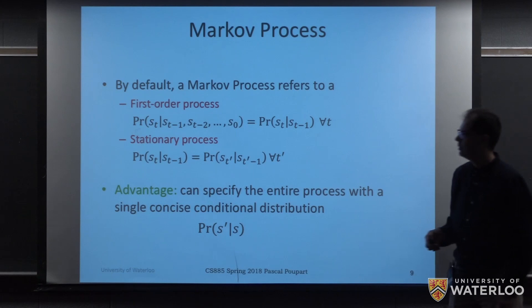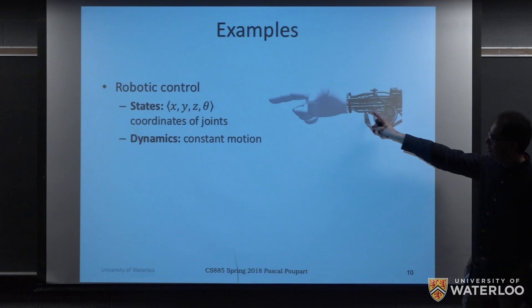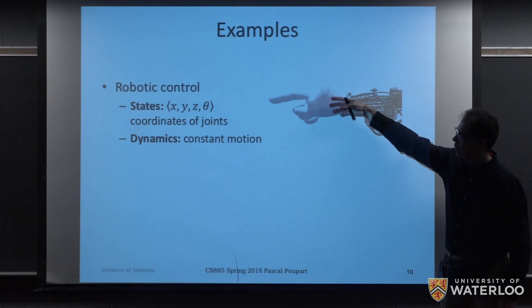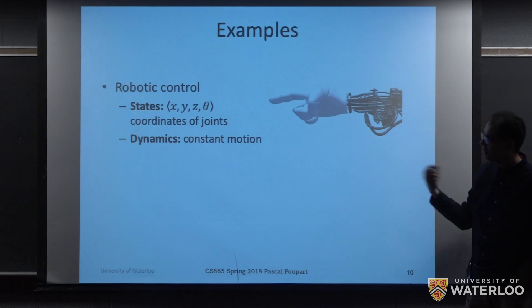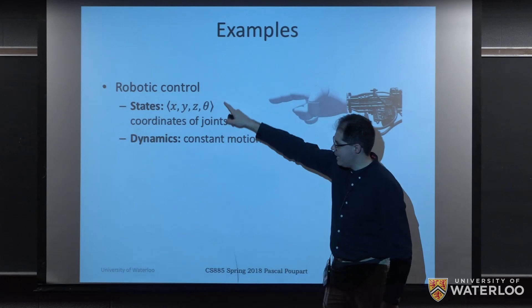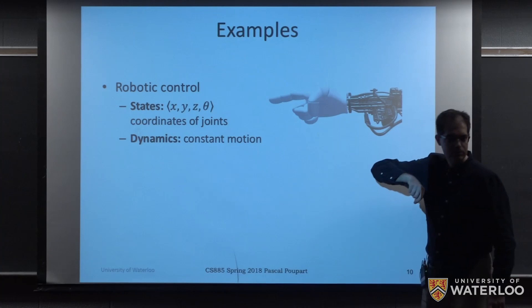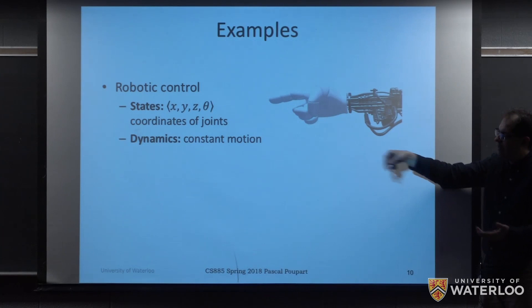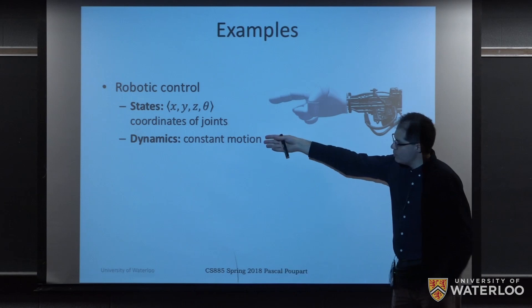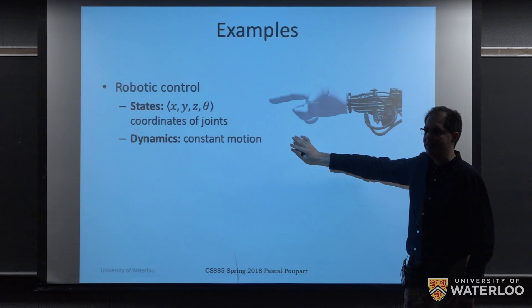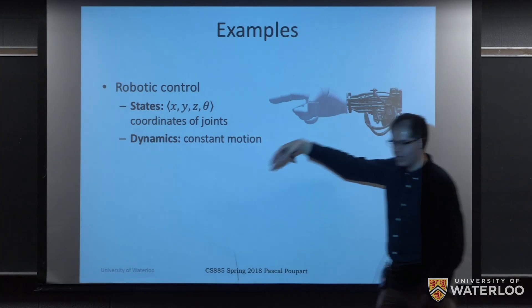As a concrete example, if we consider robotic control — let's say we've got a robotic arm and we're controlling the different articulations in the fingers so that we can grasp things. For every joint, we might want to model as a state the x, y, z coordinate of the joint plus the angle. The dynamics — we could assume that the motion of the joint is going to be constant, and this would satisfy our condition for a stationary process. But obviously this might not hold because in practice velocity or motion is not going to be constant, so there might be some acceleration.